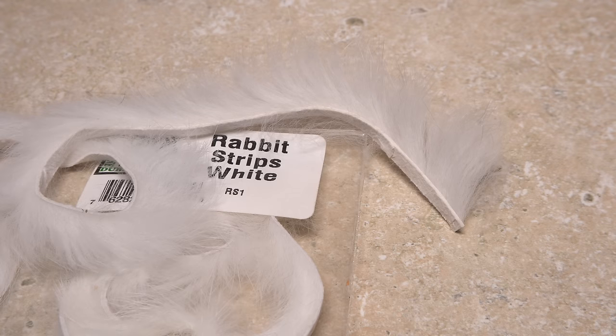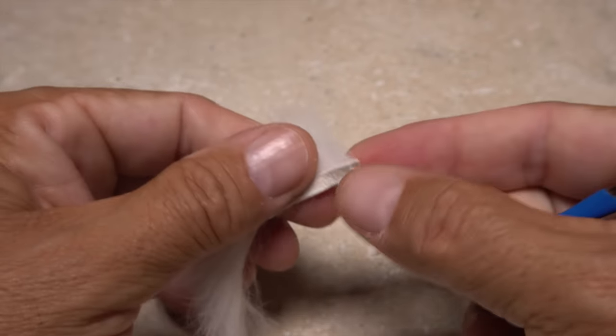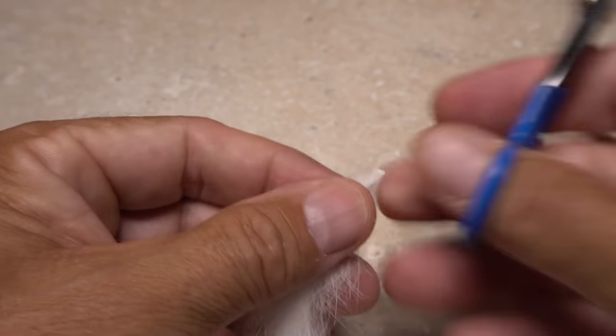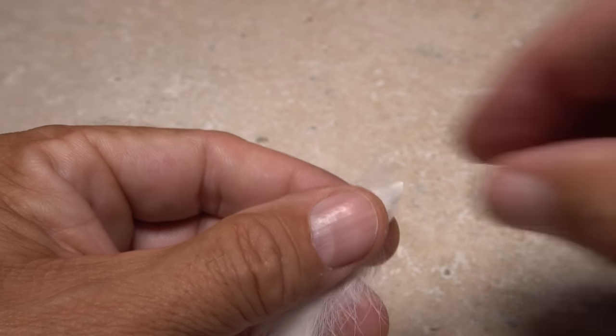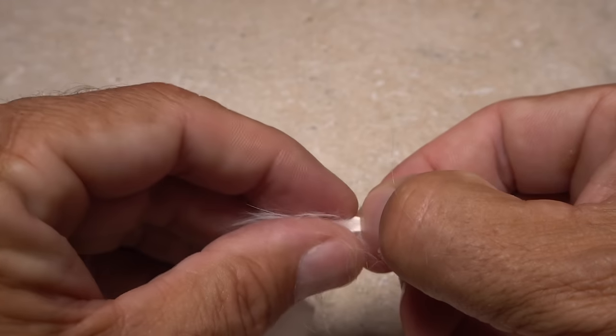A white rabbit zonker strip is used for the back and tail of the fly. Pick up the strip with the fur angled rearward and trim off the corners of the leathery hide so it comes almost to a point. Then strip away about an eighth inch of fur from that hide.